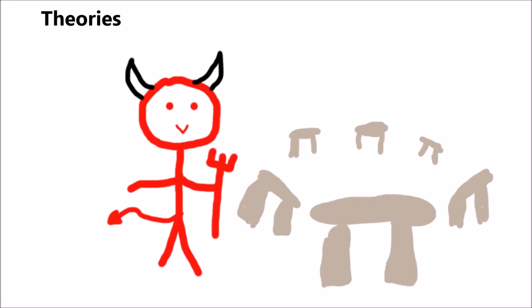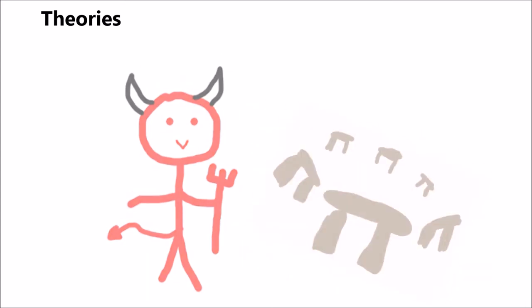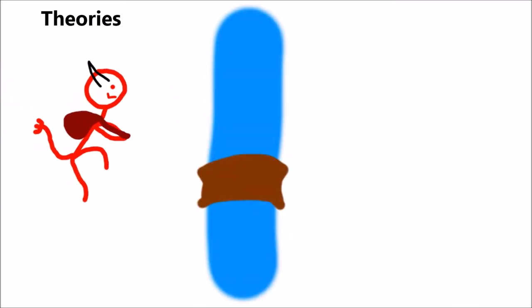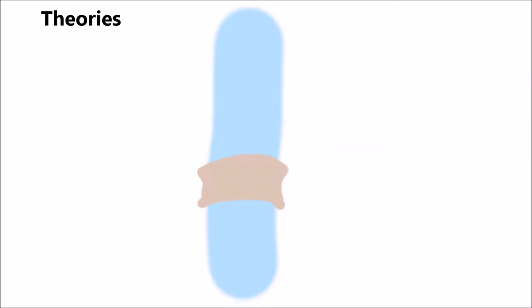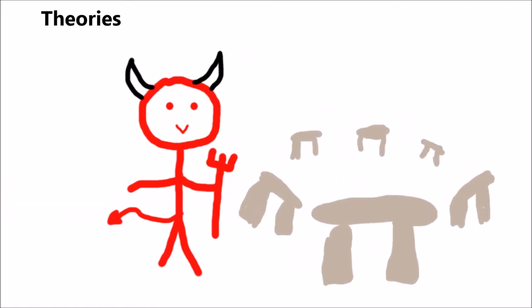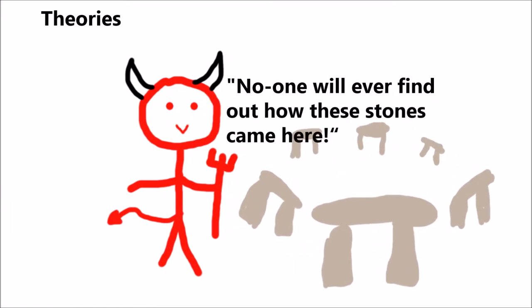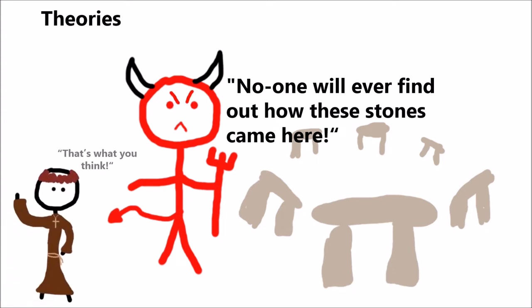Some believe that the Devil bought the stones from a woman in Ireland, before wrapping them up and bringing them over to England. The Devil then dropped one of these stones into the River Avon, before placing the rest on the plains. The Devil then shouted, no one will ever find how these stones came here. But then a friar shouted back, that's what you think. The Devil then angrily threw one of the stones at the friar, just missing him, and then hitting him on the heel. This stone would then go on to be called the Heel Stone.